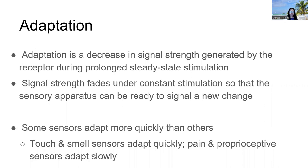Some sensors can adapt more quickly than others. Touch and smell sensors adapt quite quickly, whereas pain and proprioceptive sensors adapt much more slowly.